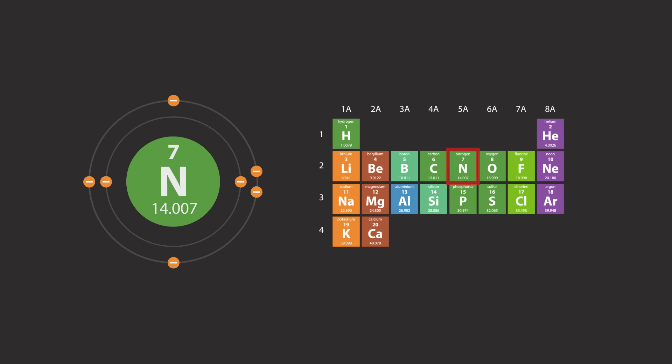For instance, let us have a look at nitrogen. Nitrogen is in group five, and has five valence electrons. Oxygen is in group six, and has six valence electrons.